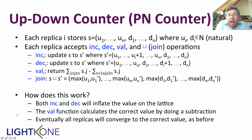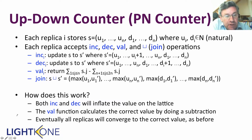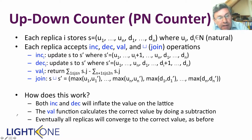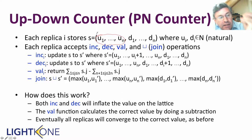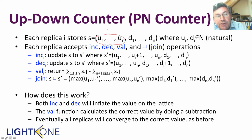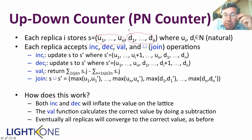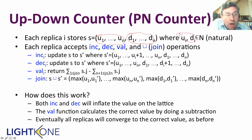Let's talk about the up-down counter. I'll give it a formal definition, which is similar to the formal definition of the grow-only counter, except that now we have a bigger vector. We have in each replica the increments — the up values — and we also have the decrements — the down values — and both of these are natural numbers, so non-negative.